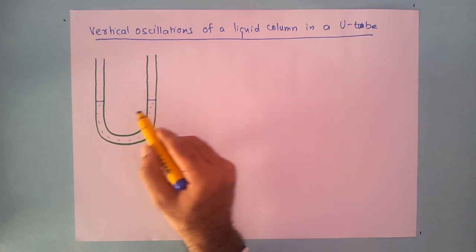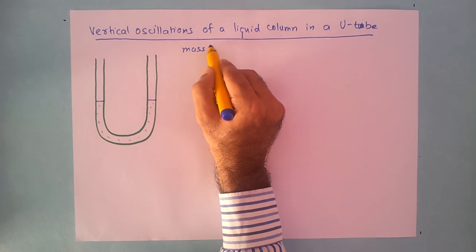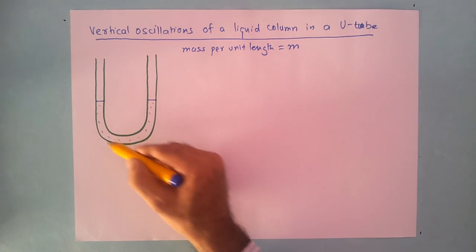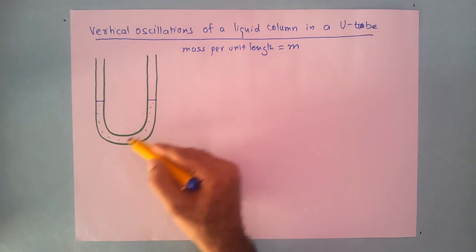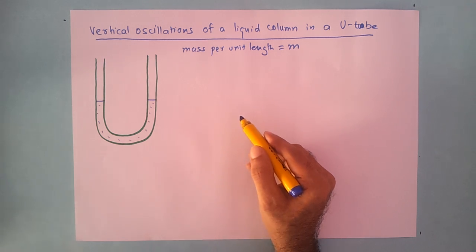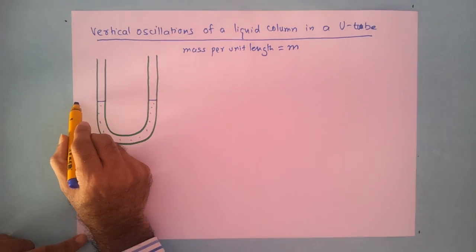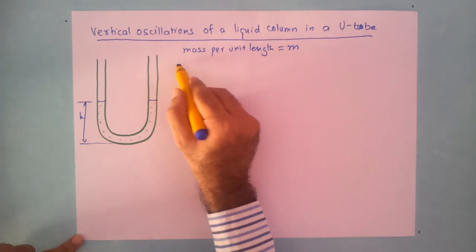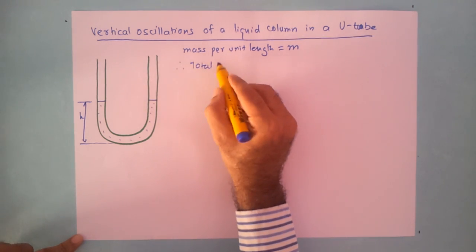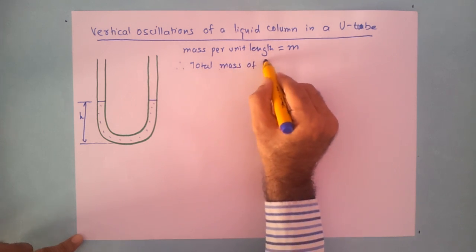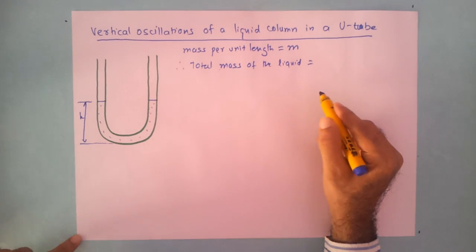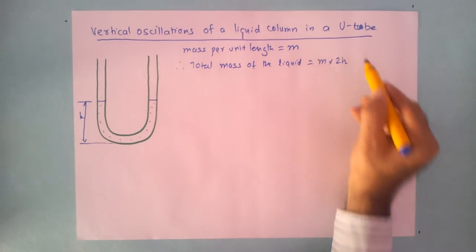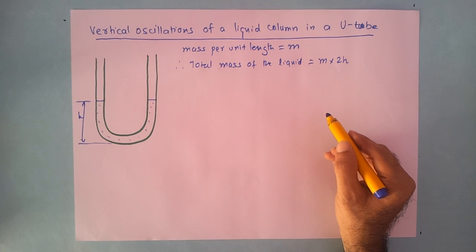Let us say we have this liquid column and the mass per unit length is equal to m. The mass of the liquid — we are not talking of density — we are simply saying that mass per unit length is m. The total length of the liquid will be h on each side, so the total mass of the liquid will be m into 2h.